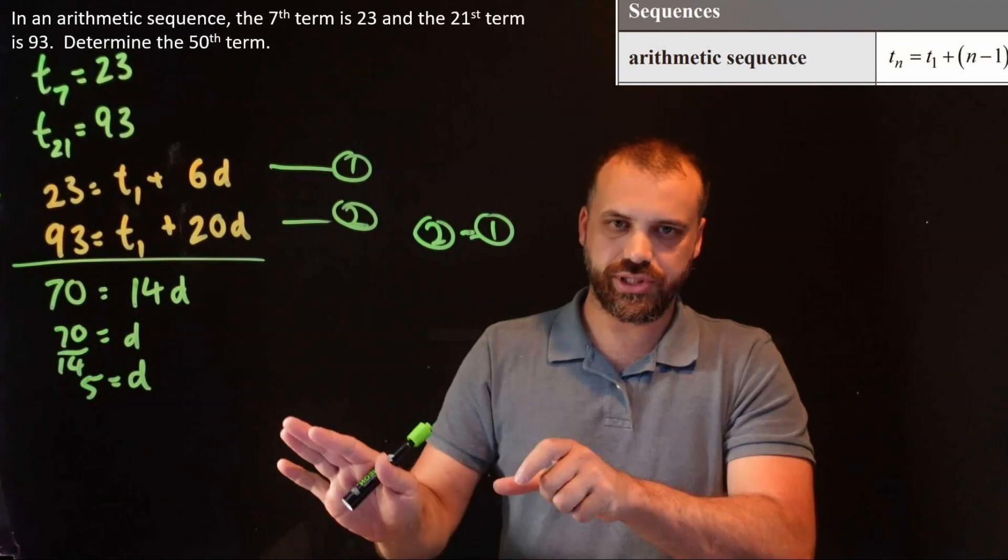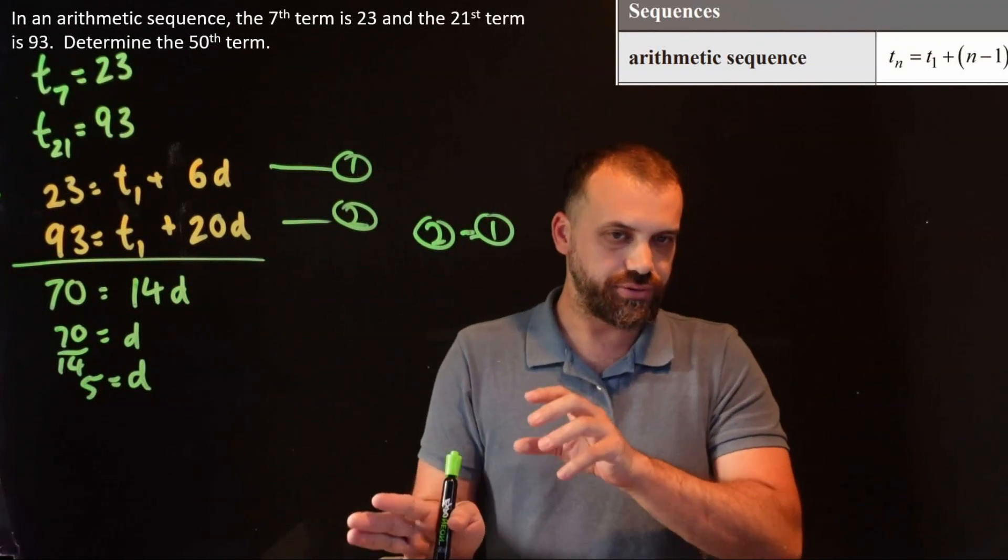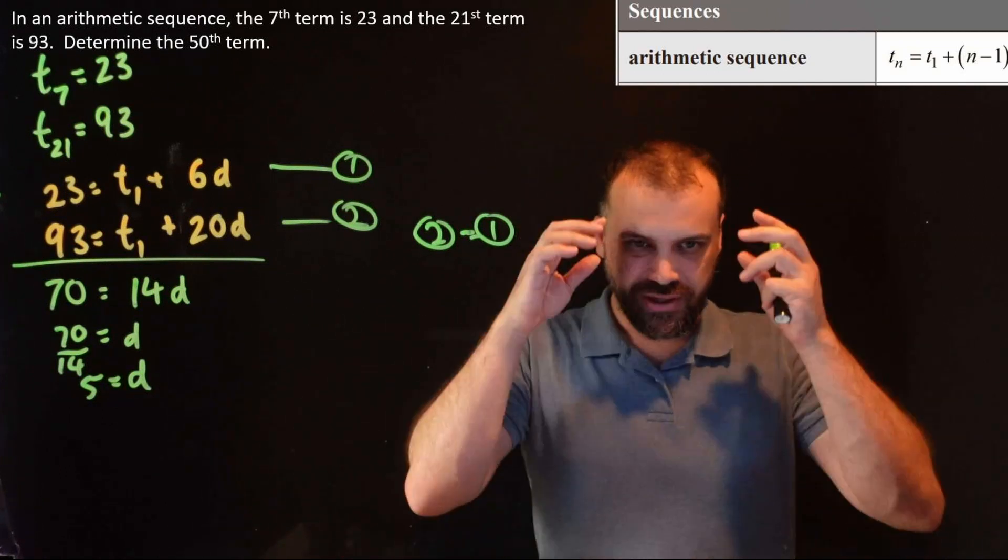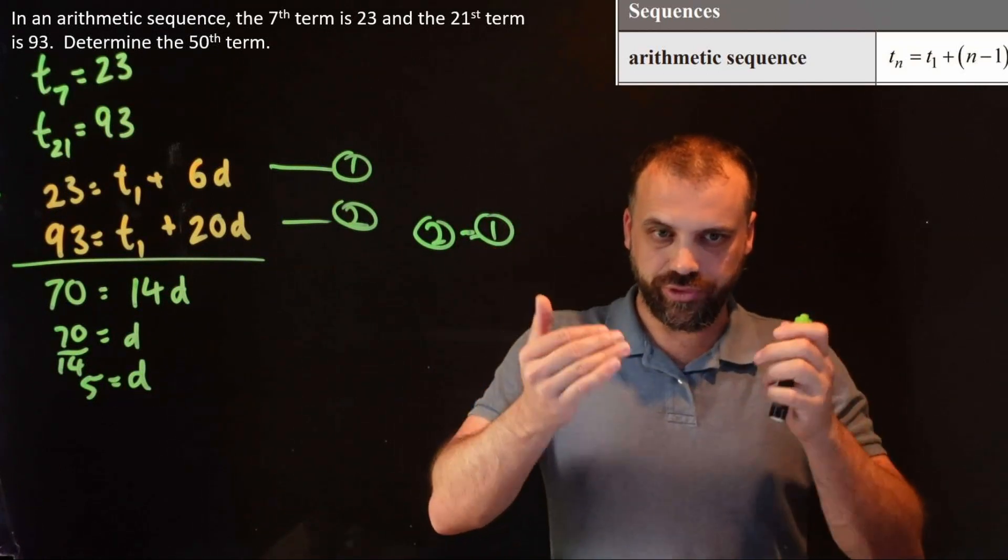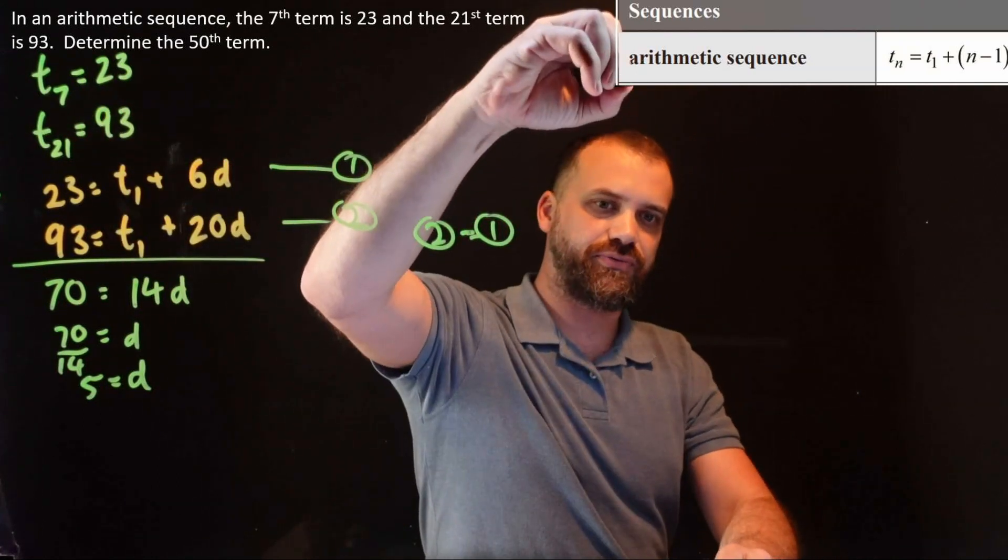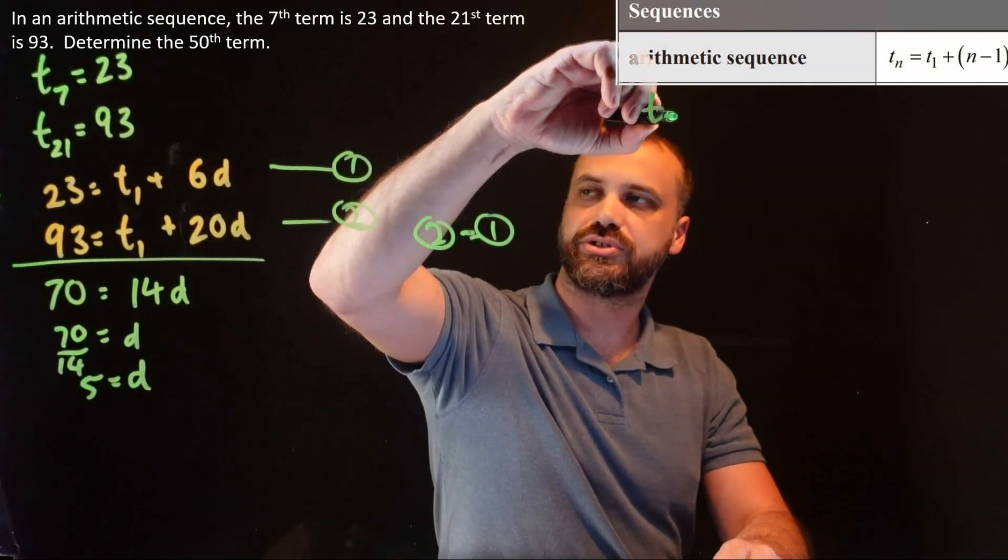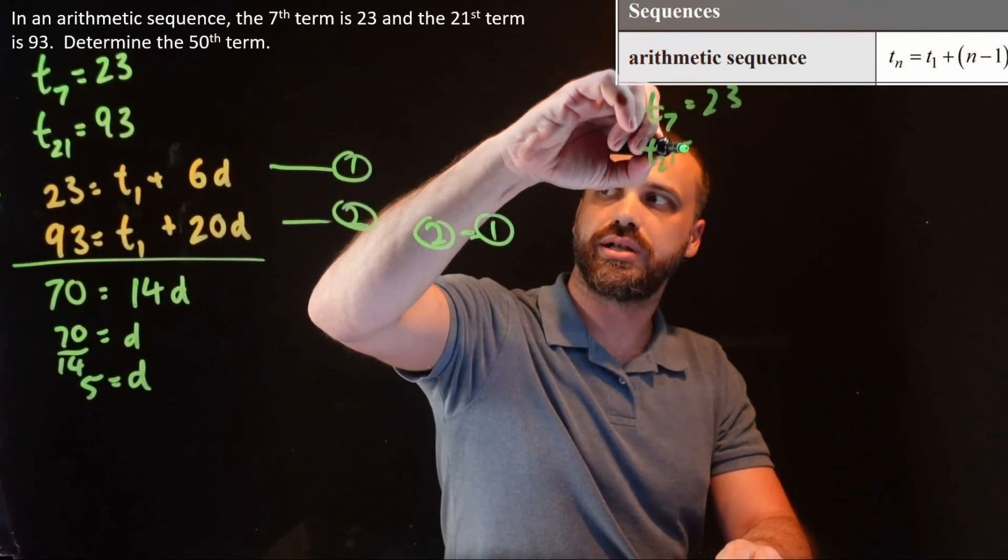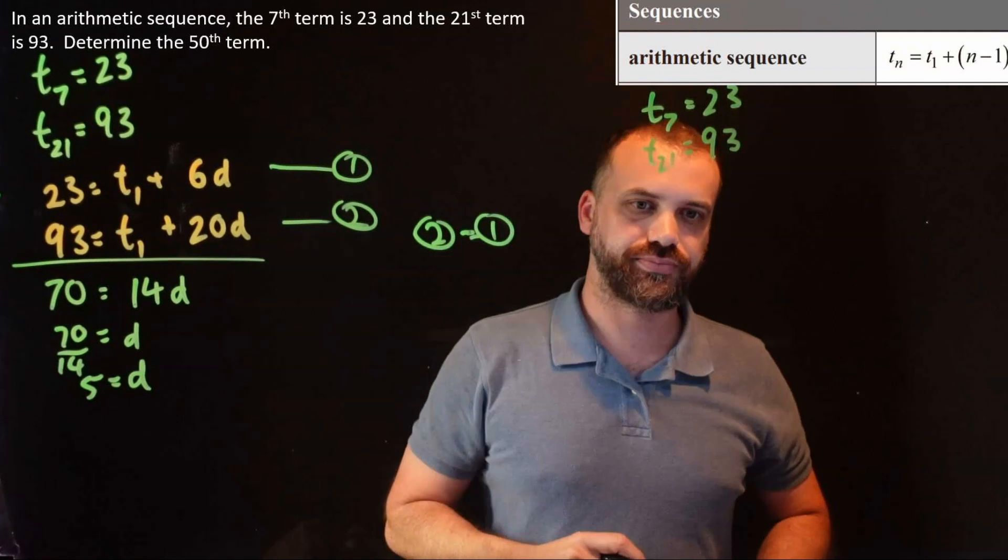So that's fine. Now, what if you don't like simultaneous equations? They freak you out, right? We can get to the same answer, d equals 5, through a little bit of logic. And what I mean by that is let's take a look again at these two bits of information that we had right at the start.